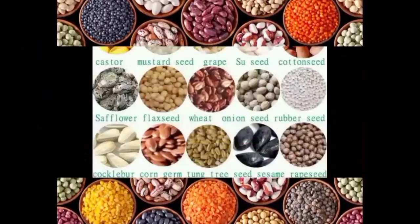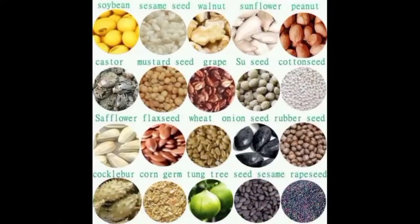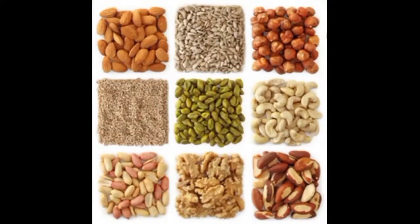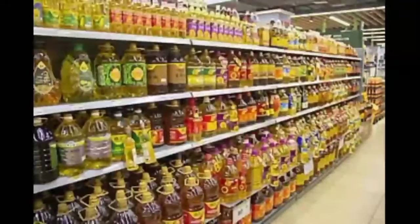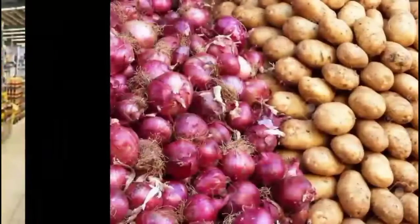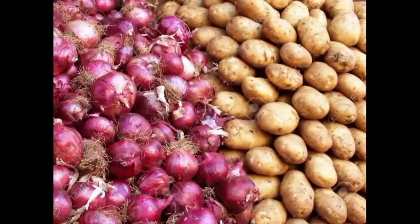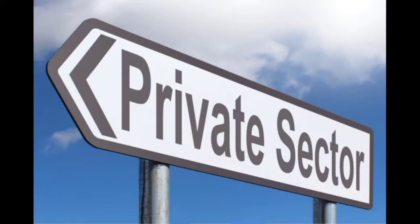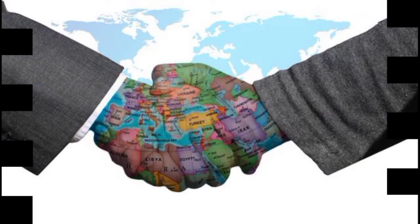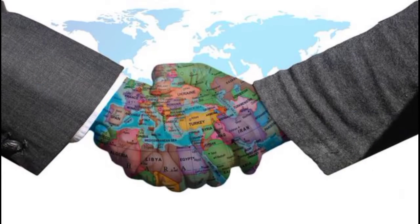The third law seeks to remove commodities like cereals, pulses, oilseeds, edible oils, onions, and potatoes from the list of essential commodities. This provision will attract private sector and foreign direct investment into the agricultural sector.